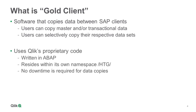The Goal Client solution consists of Qlik's proprietary code, which is written in ABAP. The Goal Client solution resides within its own namespace of HTG, which means that all of the Goal Client programs, tables, and all other development objects reside within this namespace and therefore will not have an impact on a customer system. And because Goal Client is written in ABAP, there is no system downtime required to perform the data copies, since the servers need to be available to execute the programs.